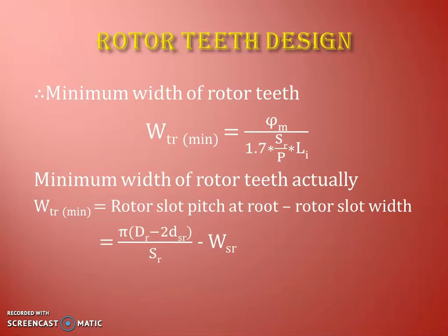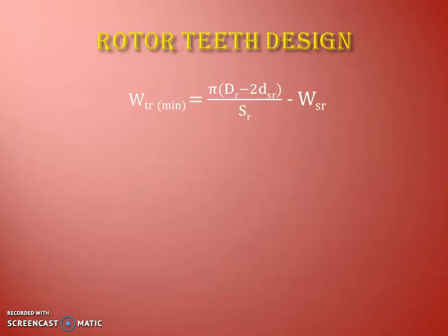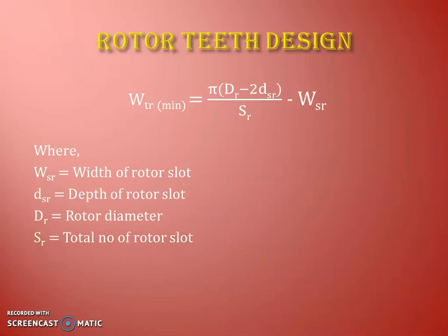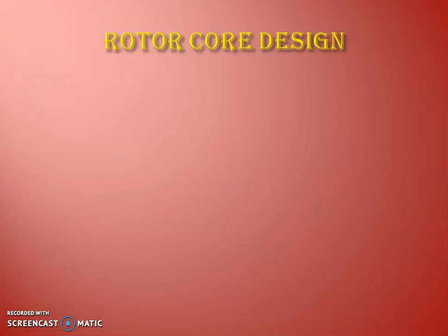The rotor slot pitch is pi times (rotor diameter dr minus two times depth of rotor slot dsr), divided by the total number of rotor slots SR. Minimum rotor teeth width equals that slot pitch minus the rotor slot width (wsr). So based on this equation, we can calculate the minimum width of the rotor teeth, where dsr is depth of rotor slot, dr is rotor diameter, and SR is total number of rotor slots.